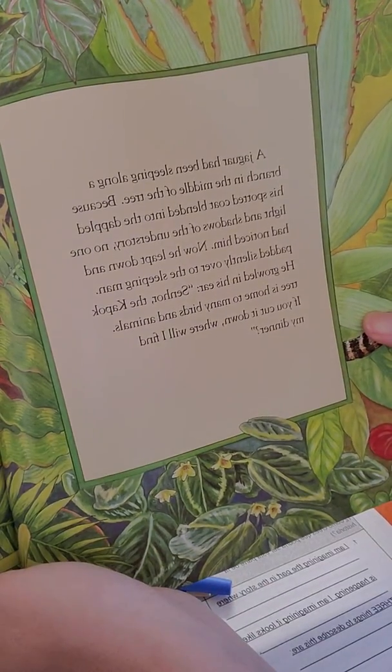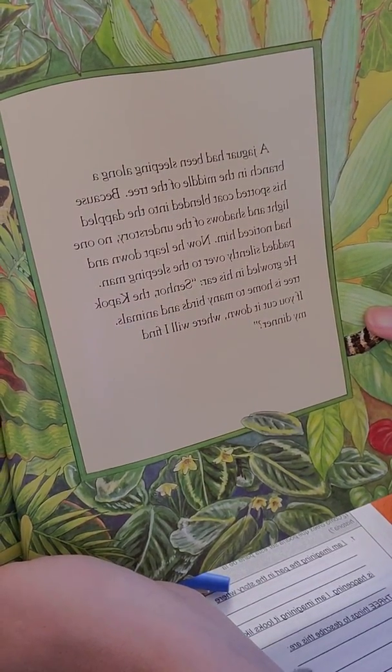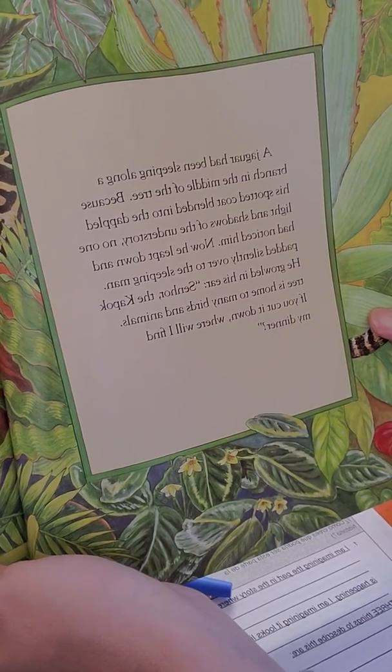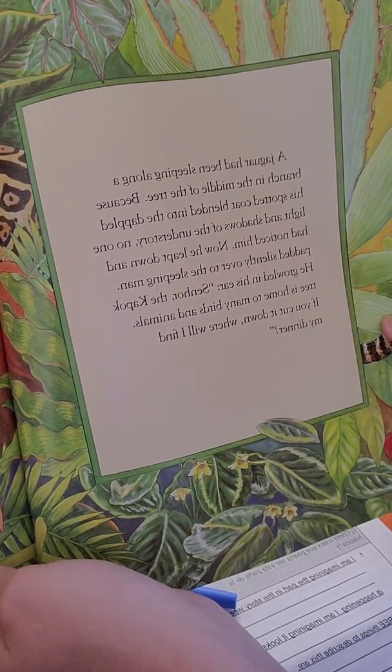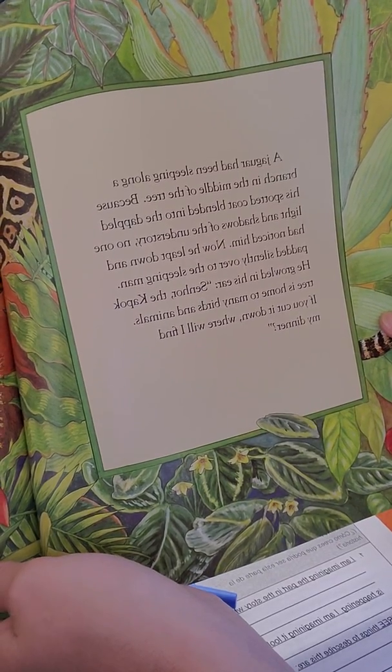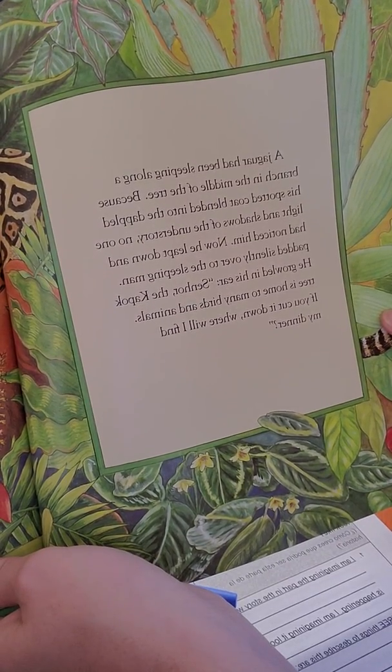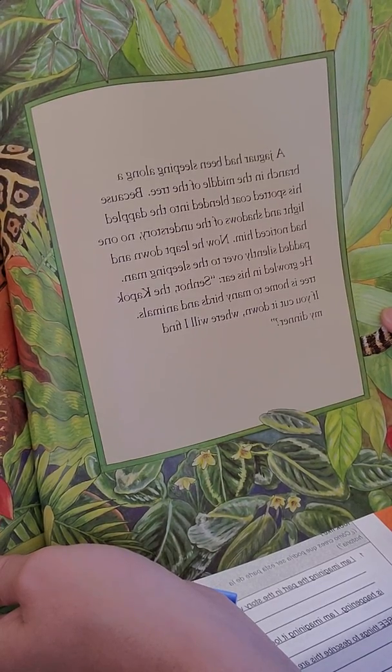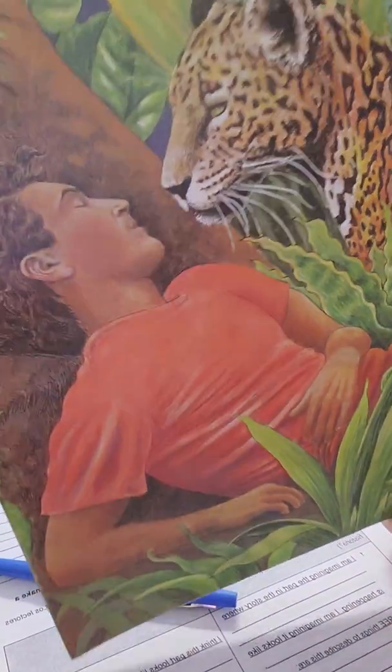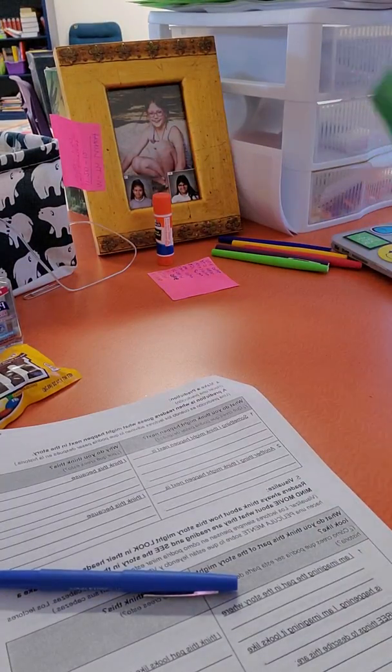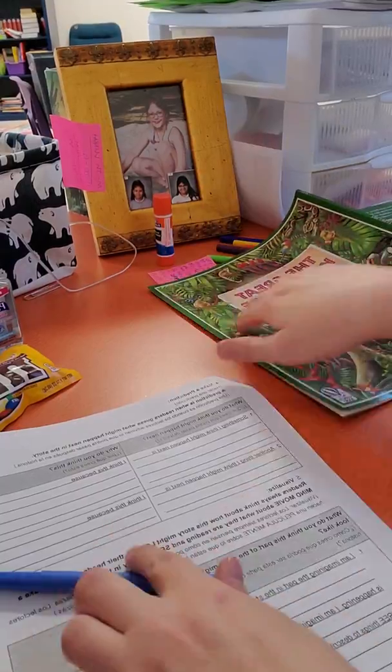A jaguar had been sleeping along a branch in the middle of the tree. Because his spotted coat blended into the dappled light and shadows of the understory, no one had noticed him. Now he leapt down and padded silently over to the sleeping man. He growled in his ear, Senor, the kapok tree is home to many birds and animals. If you cut it down, where will I find my dinner? Alright, I'm going to go ahead and pause here. Because I think we need to make a prediction.